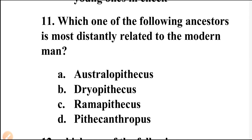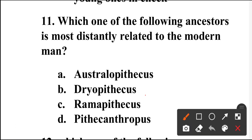Question number eleven: Which one of the following ancestors is most distantly related to modern man — Australopithecus, Dryopithecus, Ramapithecus, or Pithecanthropus? The answer is Dryopithecus. Option B is the correct answer.